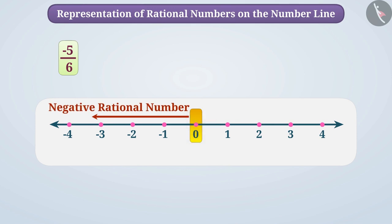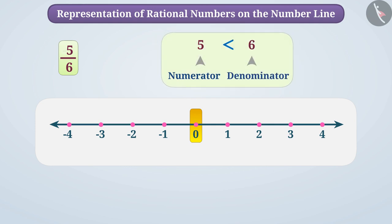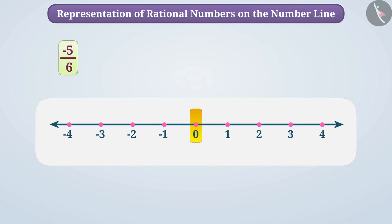Therefore, the position of minus 5 by 6 will also be on the left of 0. Let's ignore the minus sign for a while. We see that the numerator 5 in 5 by 6 is smaller than 6. From this, it is known that 5 by 6 is smaller than 1, that is less than a unit. This tells us that the place of minus 5 by 6 is between 0 and minus 1.